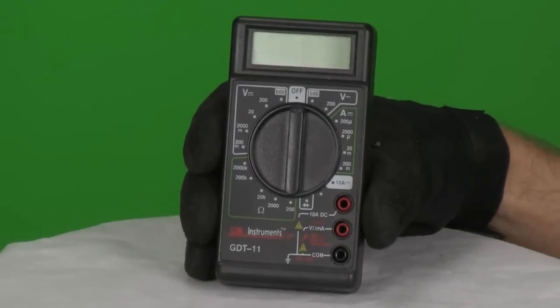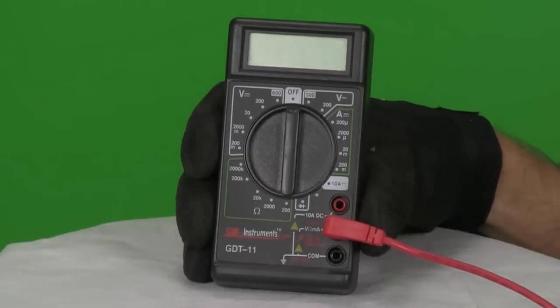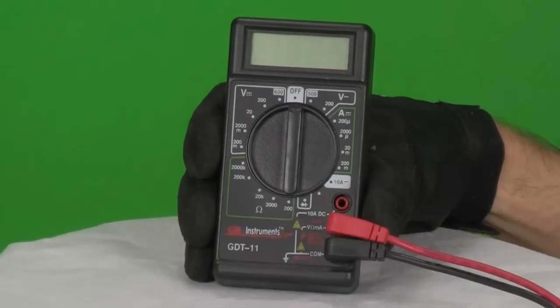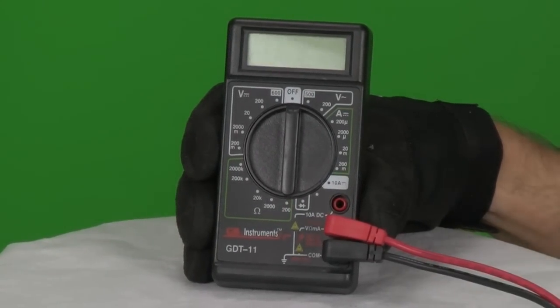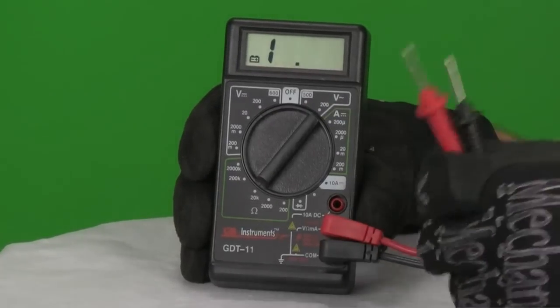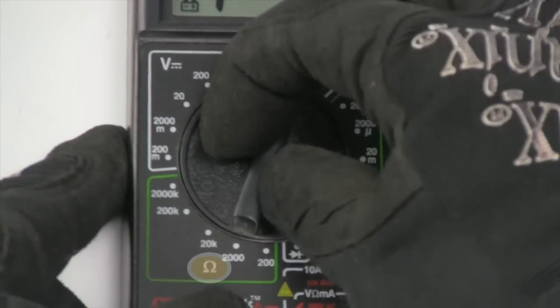Next insert the meter's leads into their proper terminals. Usually they're color coded red for positive and black for neutral. Many meters such as this one have two positive red terminals, one for measuring DC and the other for AC measurements as well as resistance readings indicated by the omega symbol.